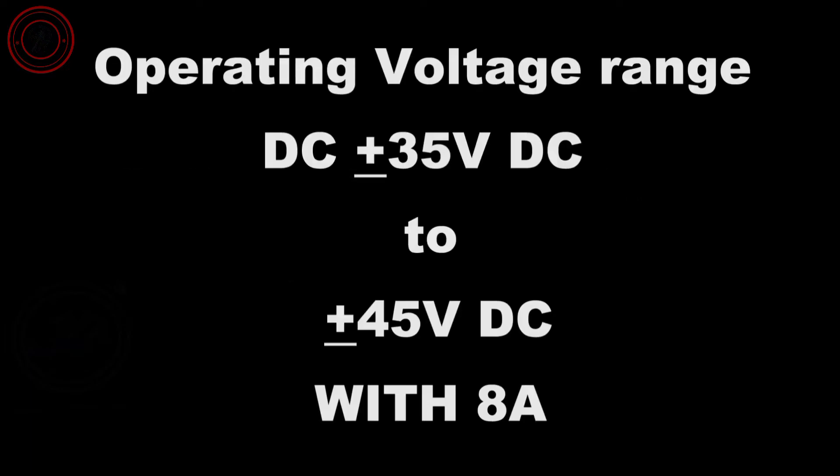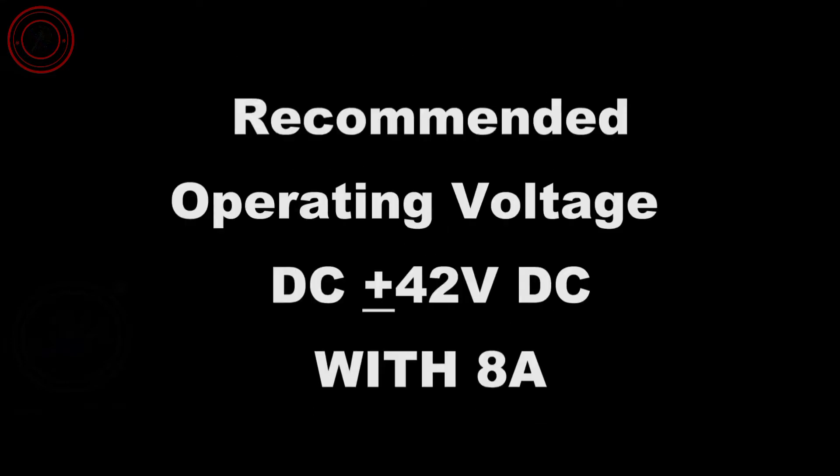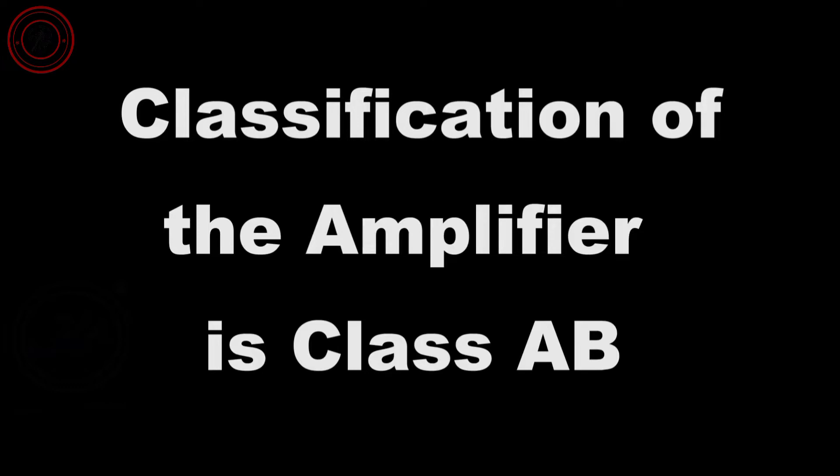Here are the specifications of the module KA2212. Operating voltage range is from DC plus minus 35 voltage to plus minus 45 voltage DC dual supply, with minimum 8 ampere. Recommended operating voltage is DC plus minus 42 volt with minimum 8 ampere. Input impedance of this amplifier module is 56 kilo ohms. Classification of this amplifier module is Class AB.